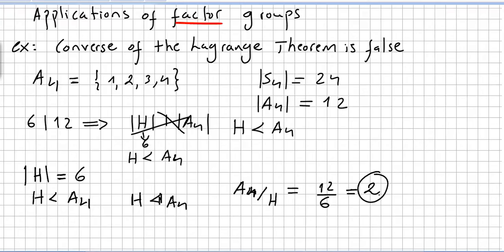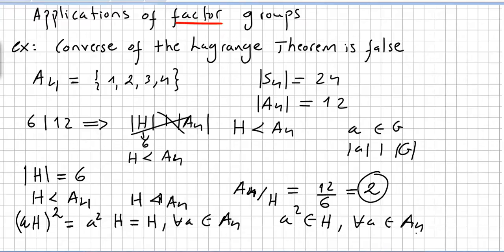But do not forget that the order of an element always divides the order of the group. So if we have A in G, the order of A will always divide the order of G. So since the order of an element divides the order of the group, we will have (AH)^2 equals A squared H, and that would be H, for all A in A4.